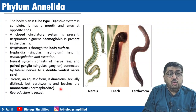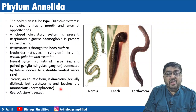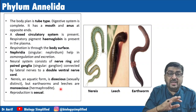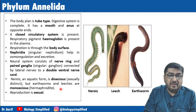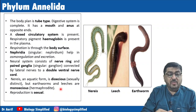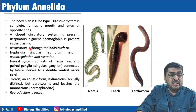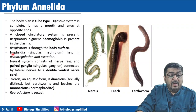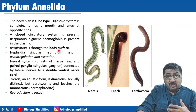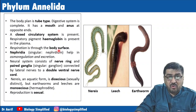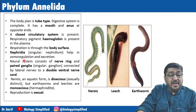The body plan is tube-within-tube type, which implies the digestive system is complete — mouth and anus at opposite ends. The circulatory system is a closed circulatory system, so there are blood vessels. The respiratory pigment hemoglobin is present in the plasma. Respiration is through the body surface — the exchange of gases takes place through the body surface. Nephridia help in osmoregulation.